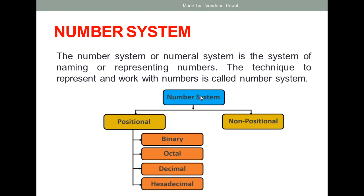Basically, if we divide number system, it is of two types: the first one is positional number system and the second one is non-positional number system. In case of non-positional, we don't work with numbers — we use symbols. But in case of positional number system, there are further parts: binary number system, octal number system, decimal number system, and hexadecimal number system. So in positional number system there are only four number systems.